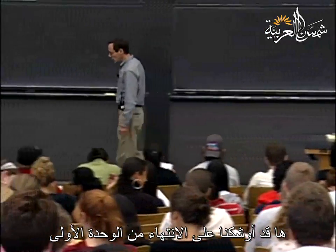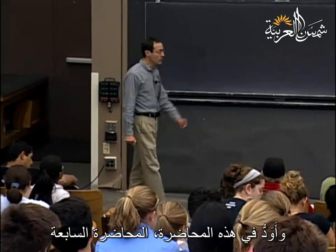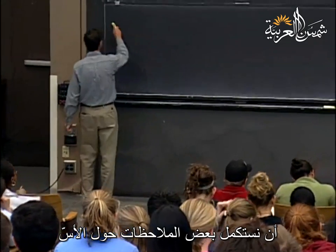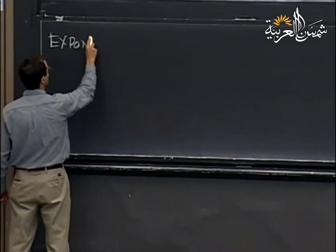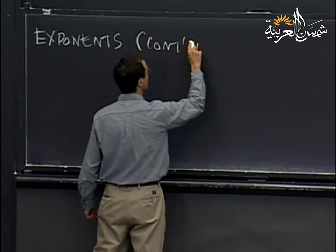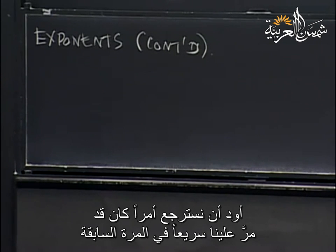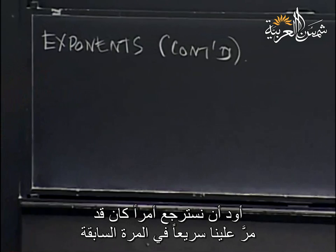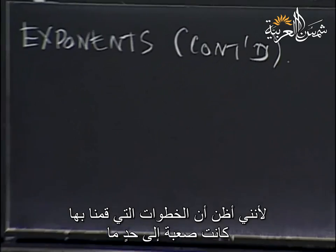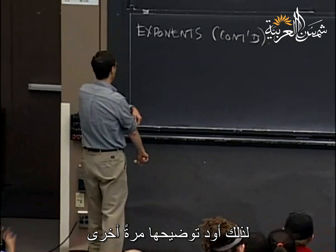Right now we're finishing up with the first unit. I'd like to continue in this lecture, Lecture 7, with some final remarks about exponents. I'd like to review something I did quickly last time and make a few philosophical remarks about it, because the steps involved were maybe a little tricky. So I'd like to go through it one more time.